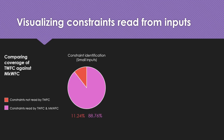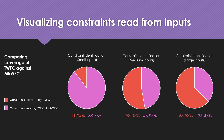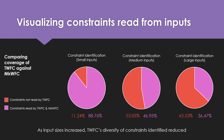When visualizing constraints read from inputs for both TWFC and MKWFC, we found that with a small input image, tiling wave function collapse identified 88.76% of the total constraints identified by MKWFC. As we increased the size of the inputs, TWFC was only identifying 46% of all constraints identified by MKWFC. As input size increased further, the diversity of constraint pairs observed by TWFC continued to reduce.